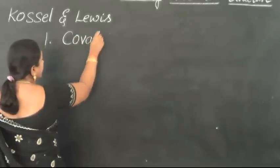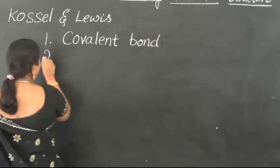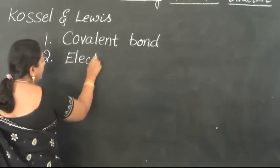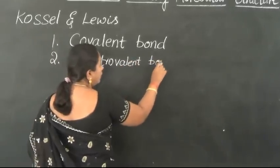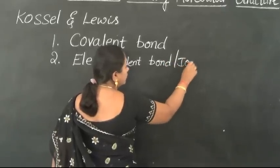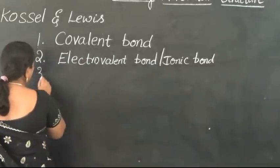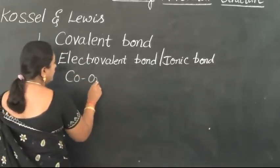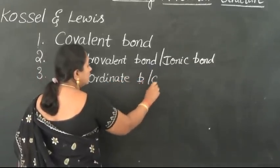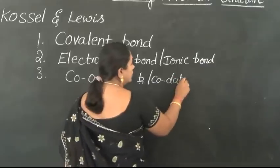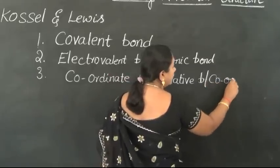Let us discuss the different types of bonds. First, covalent bond. Second, electrovalent bond — which is otherwise also called ionic bond. Third, elements also show the formation of coordinate bonds, also called dative bonds or coordinate covalent bonds.